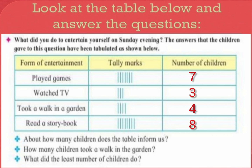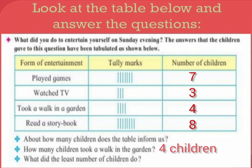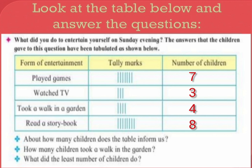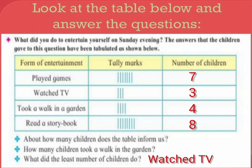Now let's answer the questions. About how many children does the table inform us? 22 children. How many children took a walk in the garden? 4 children. What did the least number of children do? Watched TV.